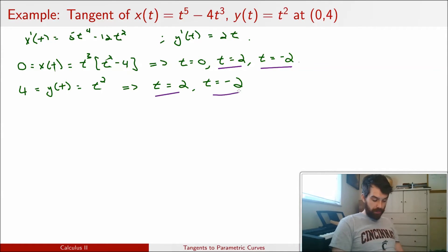It could be 2 or minus 2. There was one case that came up in x, the t equal to 0 possibility, that was not a possibility for y. And so I can disregard that. But nonetheless, I still have two different values for the possible t.